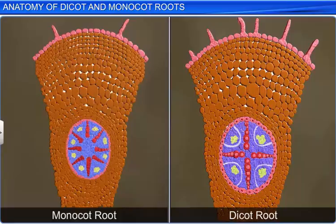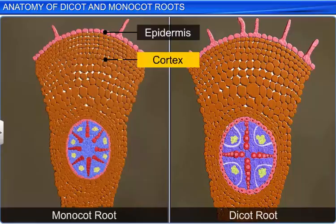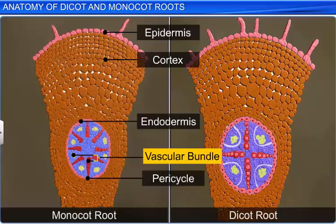Let's now take a look at how the monocot root is organized internally. In many aspects, it is similar to the dicot root. On comparing the two roots, we find the monocot root also consists of epidermis, cortex, endodermis, pericycle, vascular bundle, and pith.